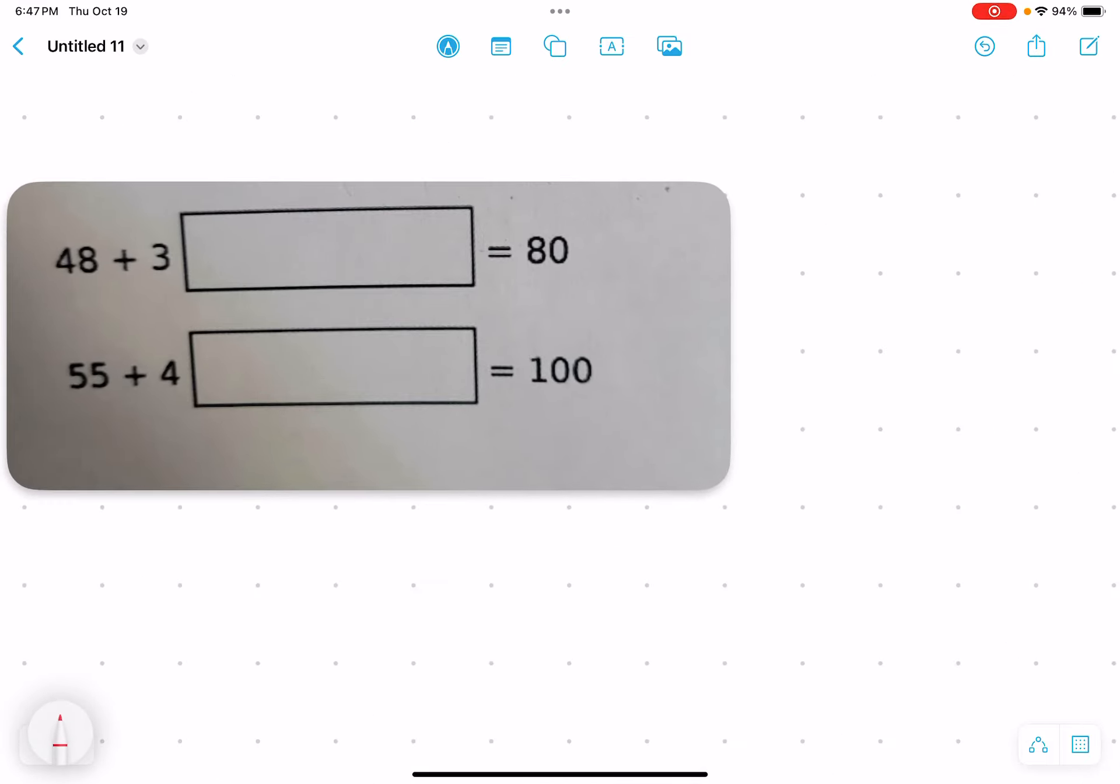The first question we're going to look at says when you add 48 plus 3 in the tens spot, and we are missing the ones, equals 80.